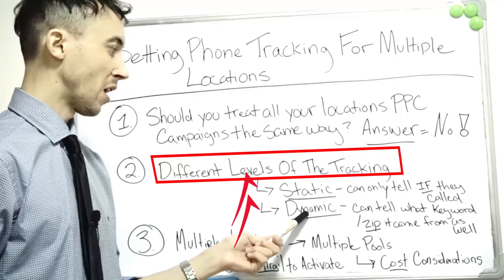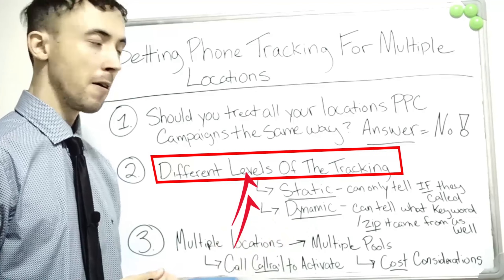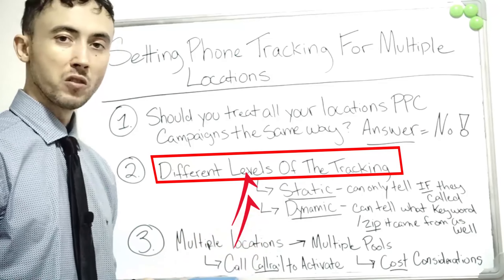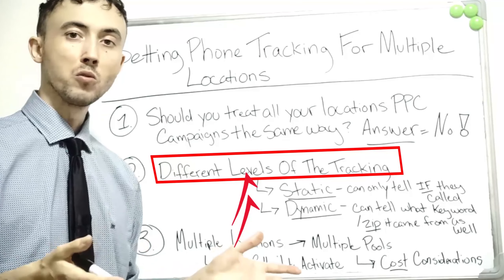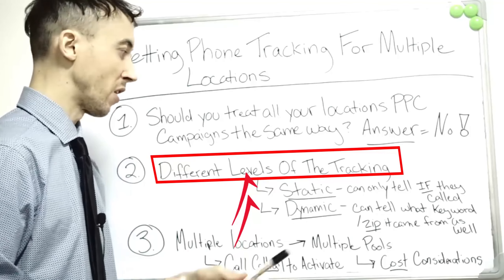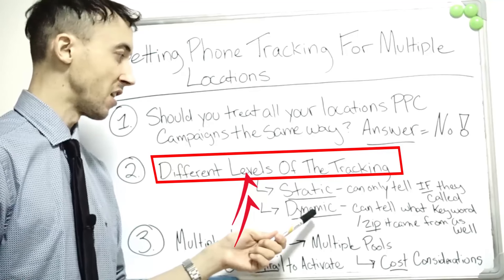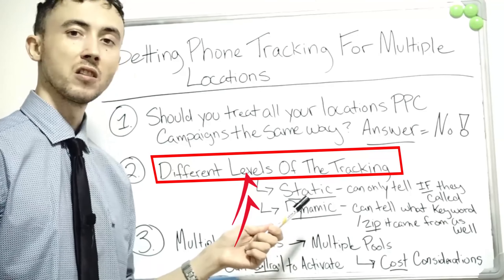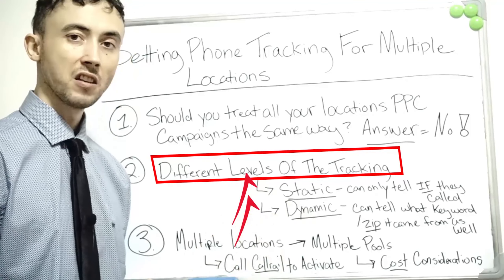With dynamic phone numbers you can do all of that, which is why you want to go for dynamic call tracking rather than static. That's something a lot of people don't necessarily know how to distinguish when they aren't dealing with this stuff every day.